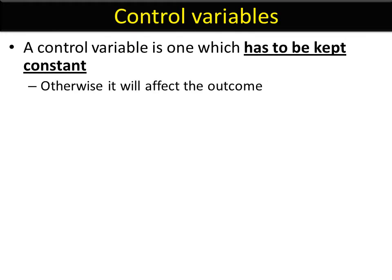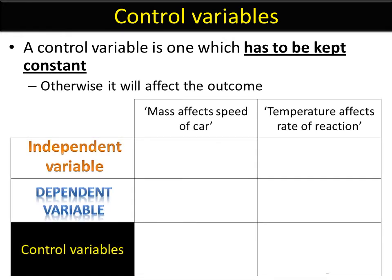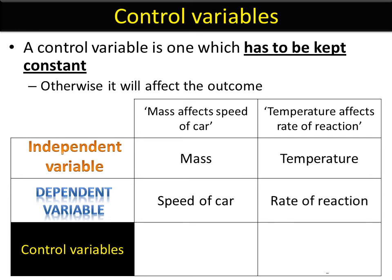Control variables — and there are usually many of them in each experiment — have to be kept constant. Otherwise they'll affect what happens and we won't know what caused the change in the dependent variable. The control variables for 'mass affects the speed of the car' would be everything else that could affect the speed of the car, kept the same so we could see what effect the mass had — things like engine size, the same car tires, the same body of the car, the same chassis, or using the same fuel. If I changed any one of those things, it might have also affected the speed of the car.